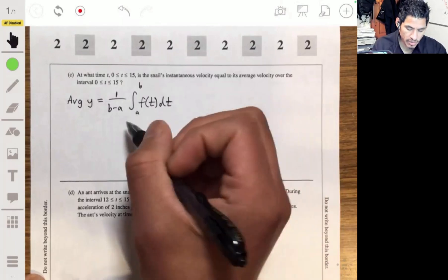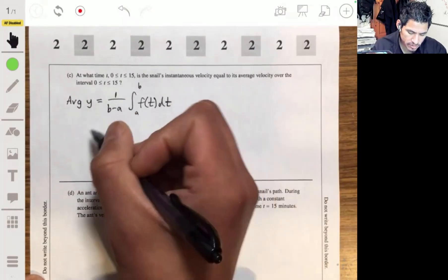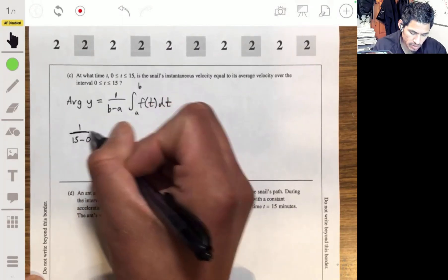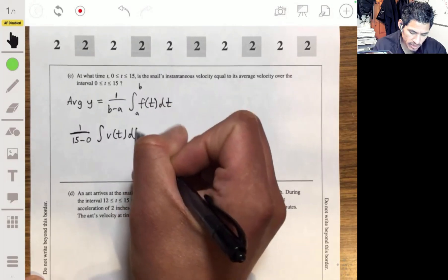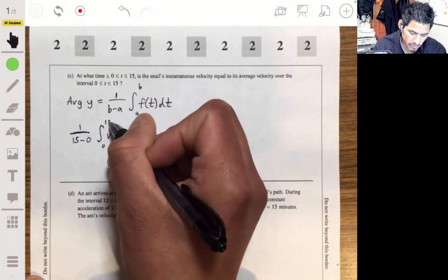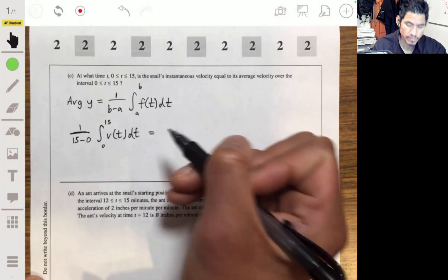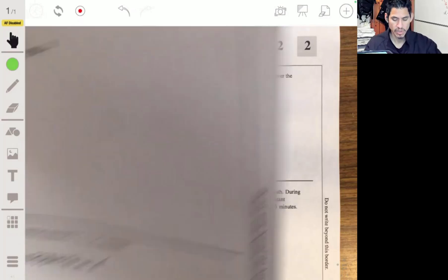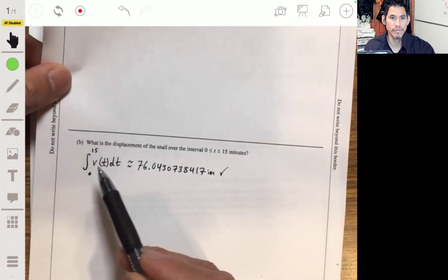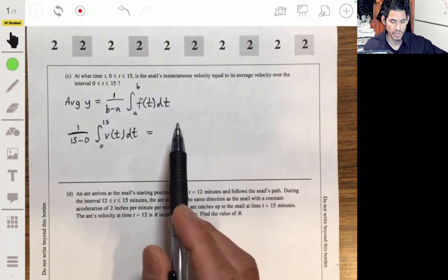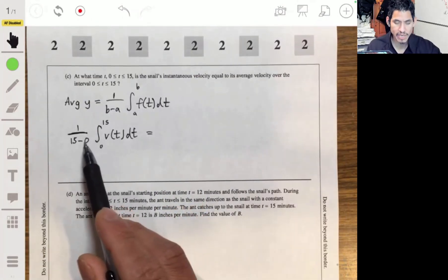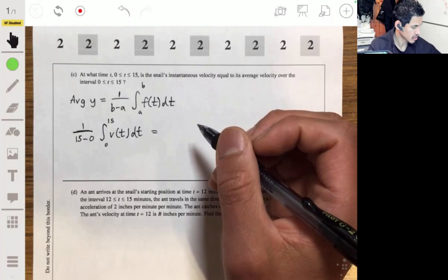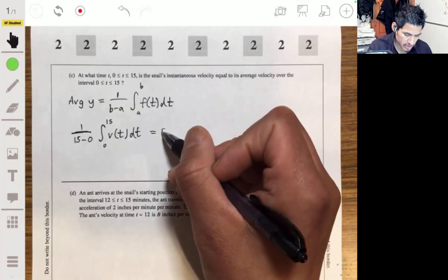In this case, we're talking about from 15 to 0, so we're going to have 1 over 15 times the integral of v(t) from 0 to 15. We just got the value of 76.04 for v(t), so then we just divide it by 15. And now that'll give us 5.06.